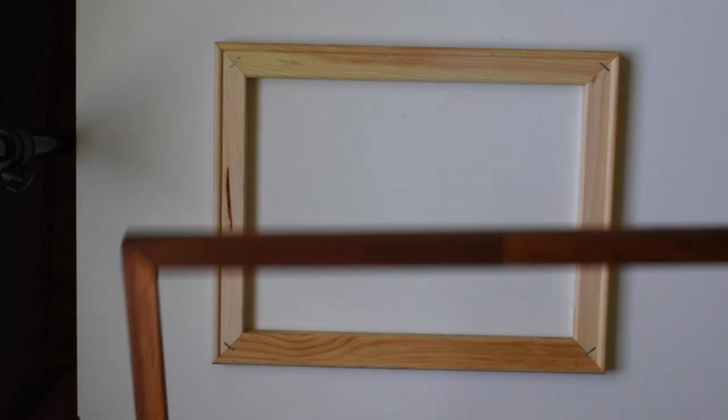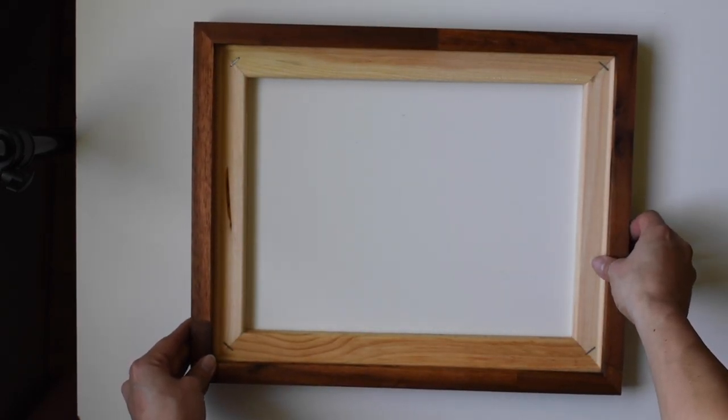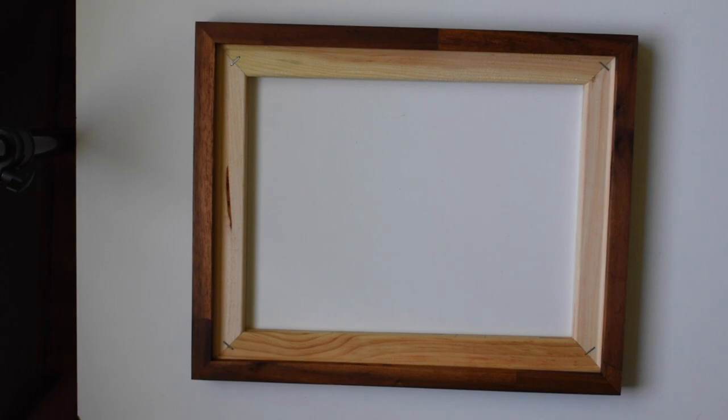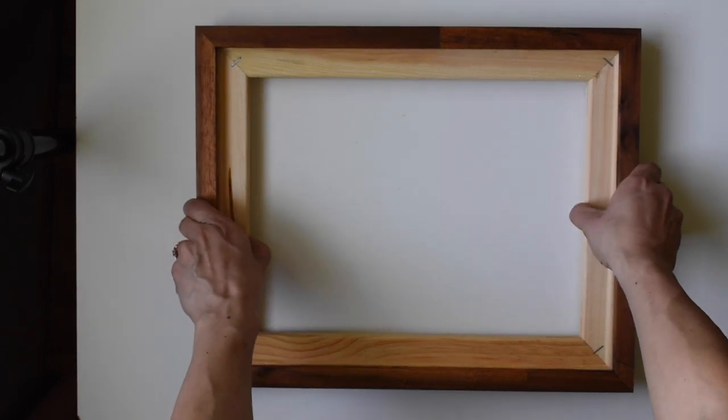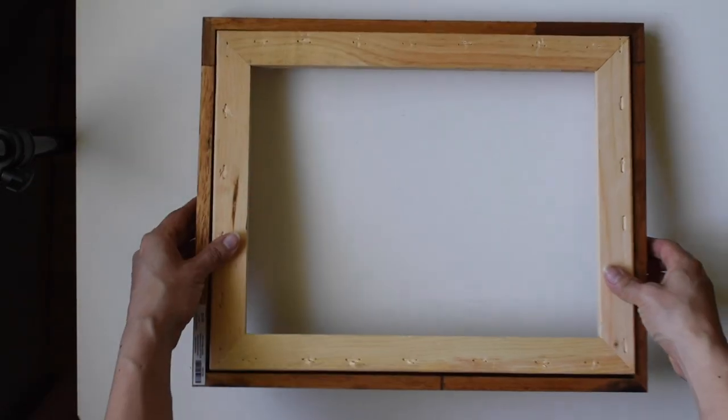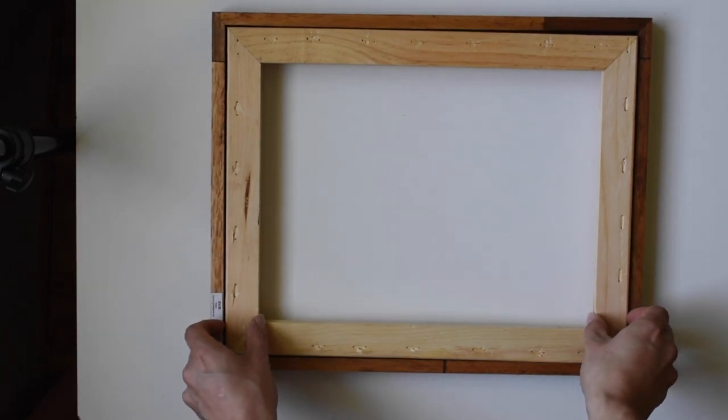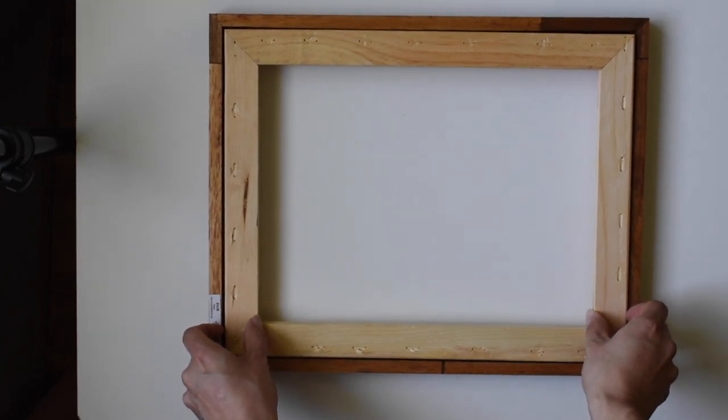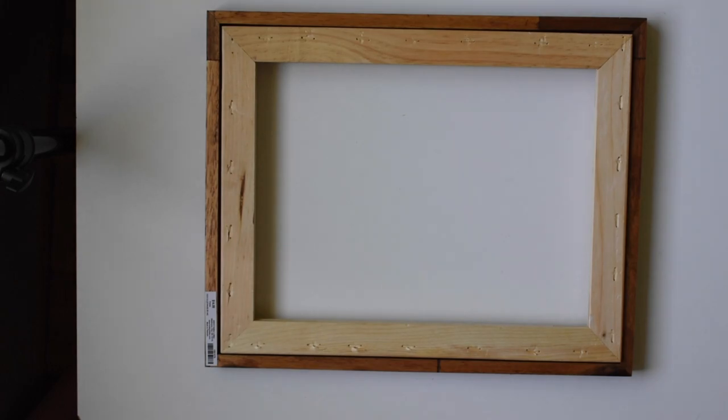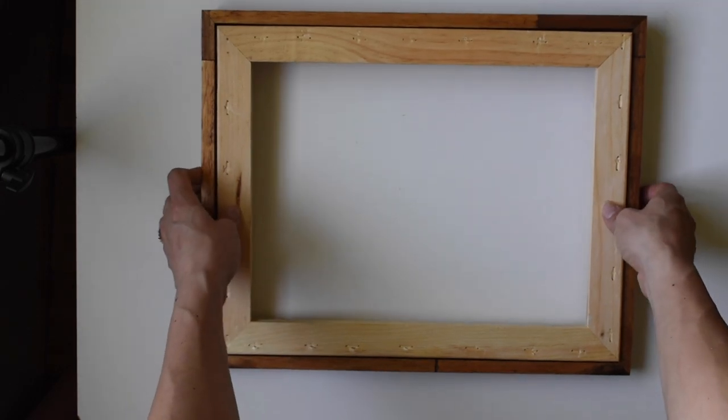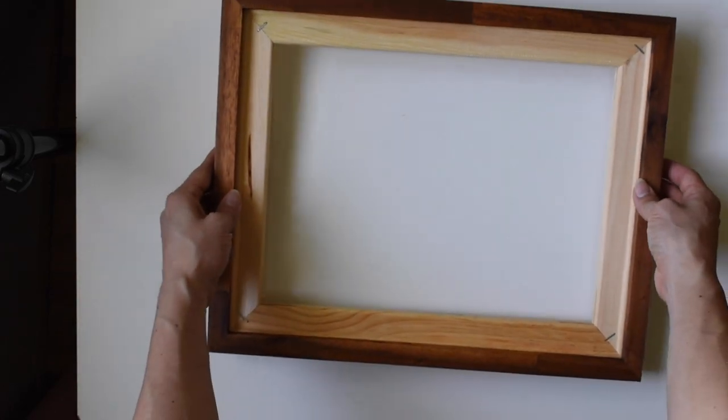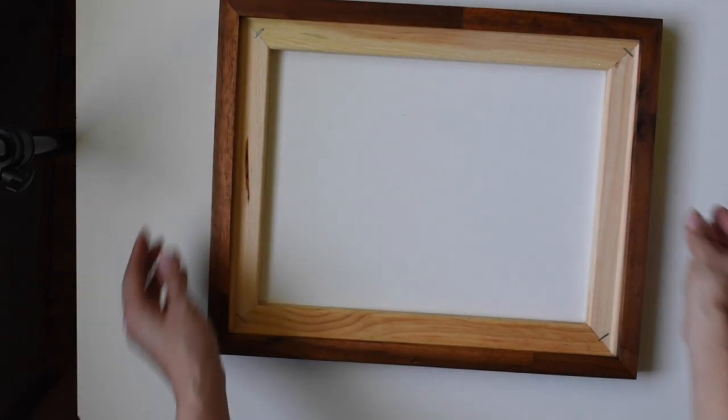So when you're choosing the frame that you want to use with your stretched canvas piece, it should fit really snugly around your stretcher bars. You can see from the back how there aren't really any gaps, and that way you have a nice and clean look when you're finished. Of course you don't have to use a frame, but I prefer to just because if you do frame your piece, then you can cover the back more easily.